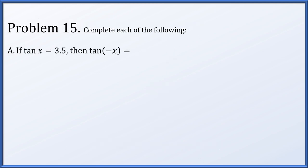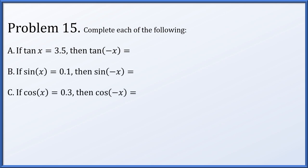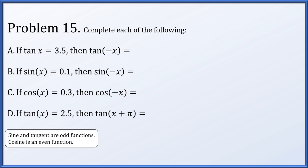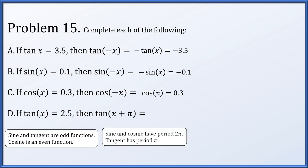Problem 15: complete each of the following using even/odd function properties. Sine and tangent are odd functions; cosine is even. So tan(−x) = −tan x = −3.5. Sin(−x) = −sin x = −0.1. Cos(−x) = cos x = 0.3. Finally, since tangent has a period of π, tan(x + π) = tan x = 2.5.